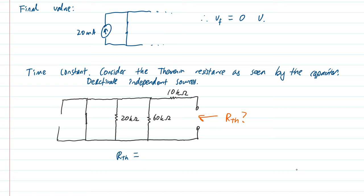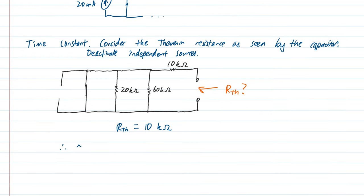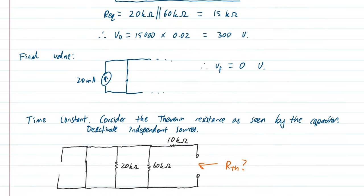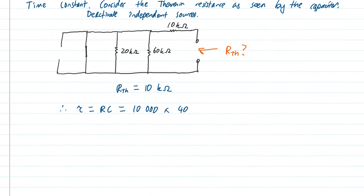I can read it off directly from this diagram. The Thevenin resistance looking into those pins is just 10 kilo ohms. So therefore we can calculate the time constant. The time constant for an RC circuit is just R times C. So I have 10 kilo ohms multiplied by our capacitance of 40 nanofarads, 40 by 10 to the minus 9.